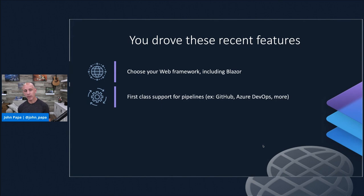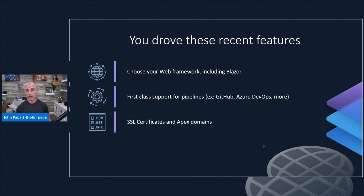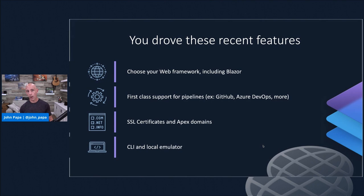We also heard that you want first class support for something beyond just GitHub Actions. So now we've got support for pipelines like Azure DevOps as well, and more coming. Your feedback also drove that not only did you want SSL certificates to be easy to use, but you also wanted them to be automatically deployed and then have Apex domains or root domains. So you could just say shopathome.com or .dev for your application. And then we have a CLI and a local emulator — in response to you all wanting to be able to run things locally the same way they run in the cloud.